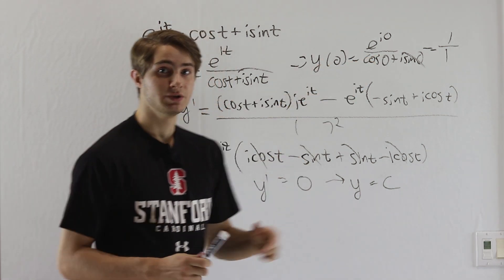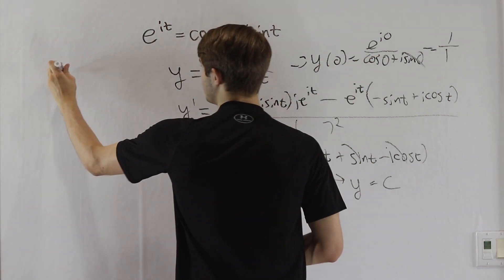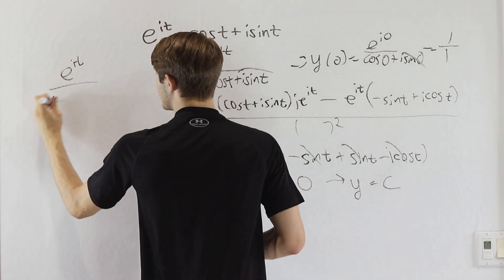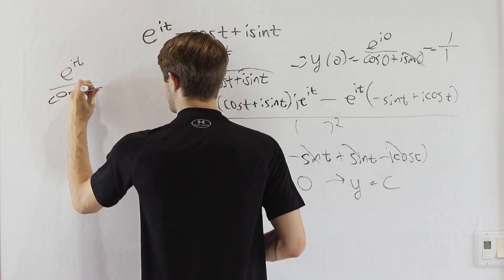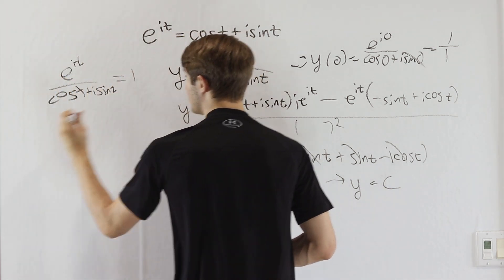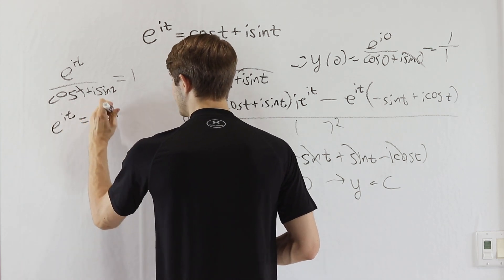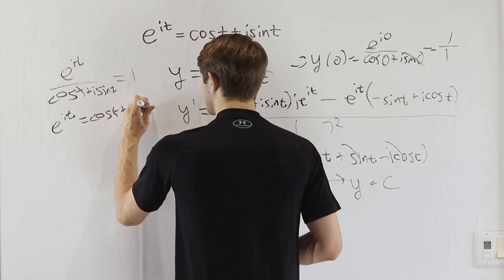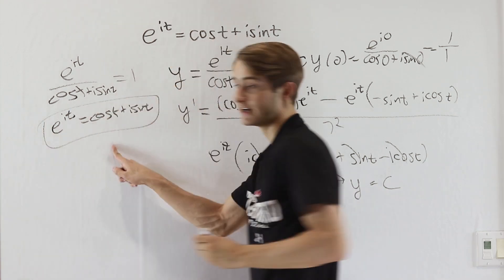Because y is a constant, we know that y is 1 everywhere, which means that e to the it over cosine t plus i sine t is always equal to 1, and therefore e to the it equals cosine t plus i sine t, and we are done.